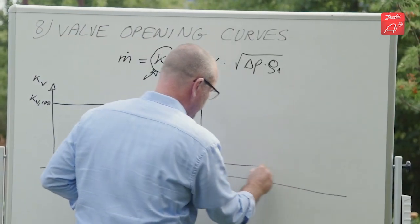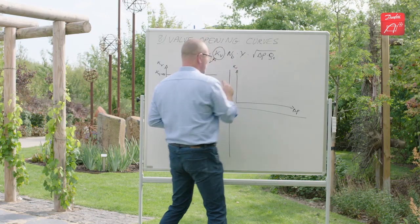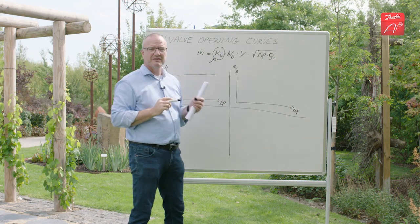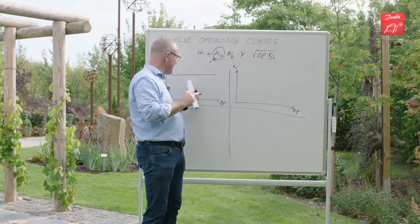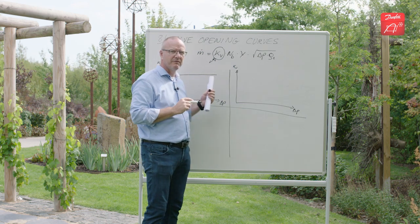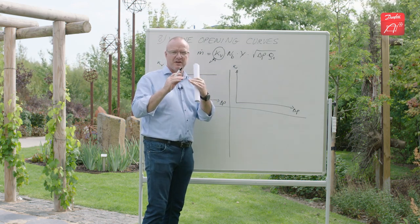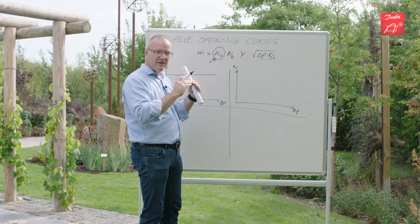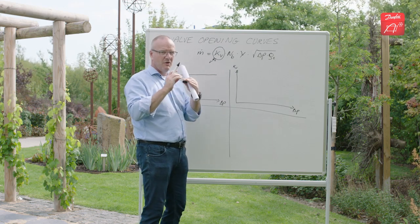The second valve type is also a solenoid valve. It's the diaphragm solenoid valve. These valves are very much like the direct operated solenoid valves except they have a diaphragm inside the valve. And for this diaphragm to actually open you need a small pressure drop.